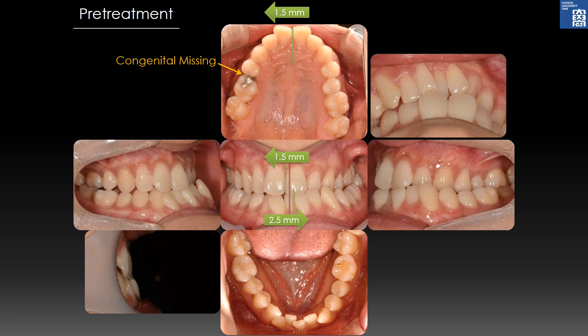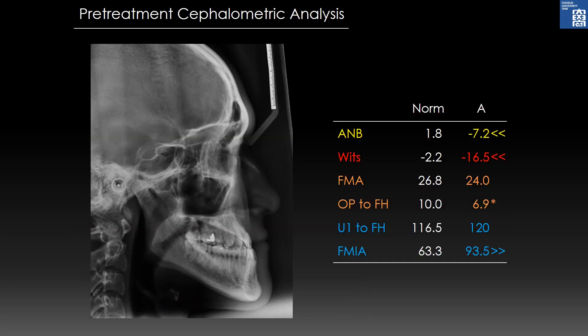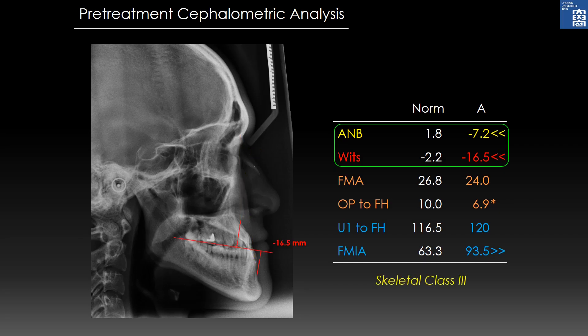However, this was less than half of the skeletal deviation due to the transverse compensation. Molar relationships were 3.5 and 5 mm class III. Cephalometric analysis showed an ANB angle of minus 7.2 degrees with a Wits appraisal of minus 16.5 mm. Maxillary incisors were proclined and mandibular incisors were retroclined as an anteroposterior dental alveolar compensation.